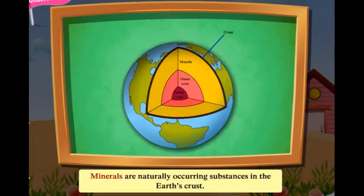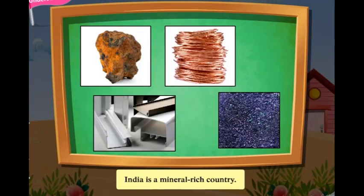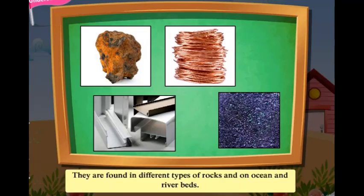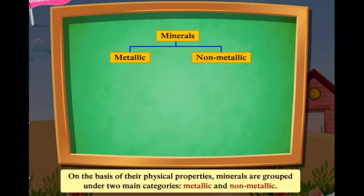Minerals are naturally occurring substances in the earth's crust. India is a mineral rich country. They are found in different types of rocks and on ocean and river beds. On the basis of their physical properties, minerals are grouped under two main categories.